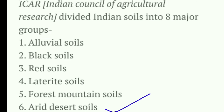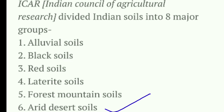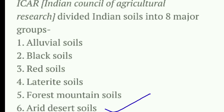Next is arid and desert soil. In desert areas, rainfall is very low and temperature is high. Moisture is highly evaporated and salt content is significant. We can say desert or arid soil is not fertile because it lacks organic content.